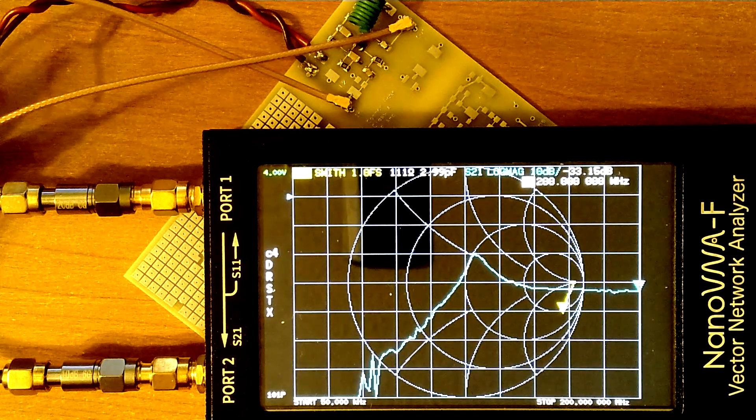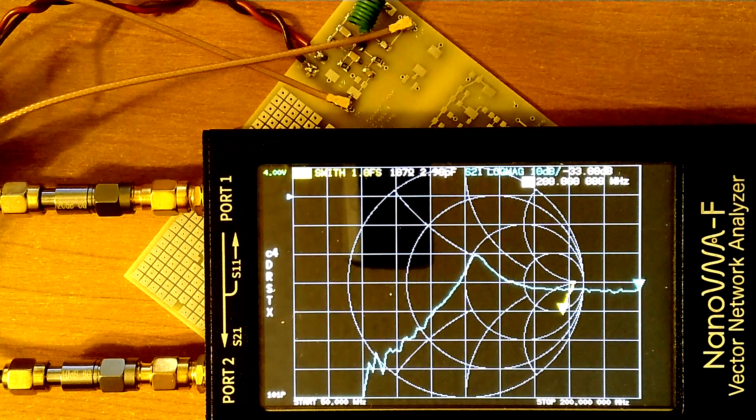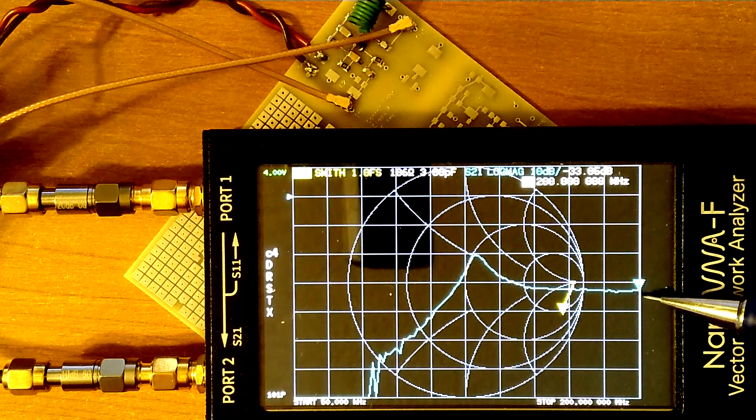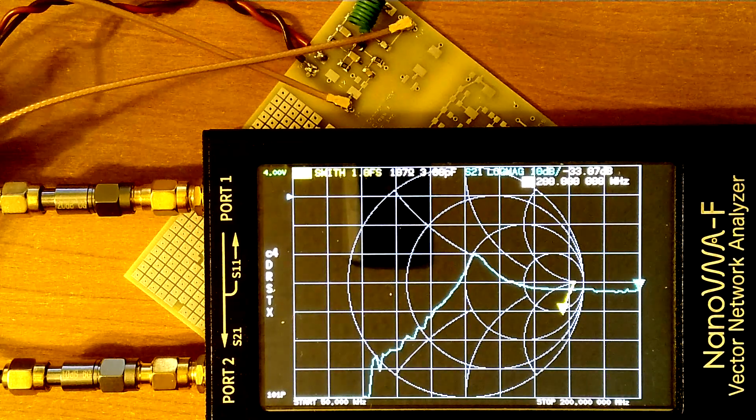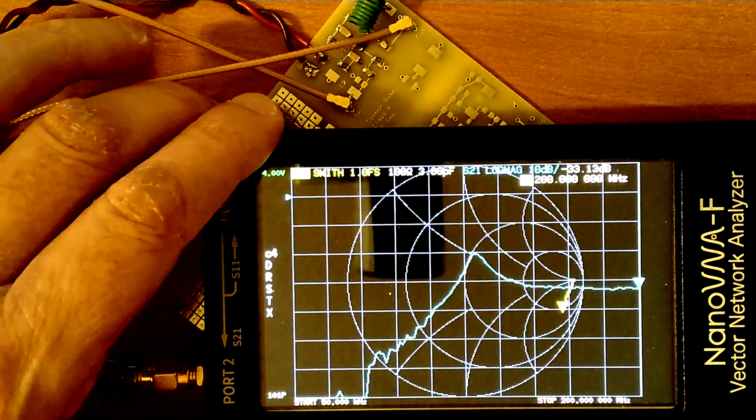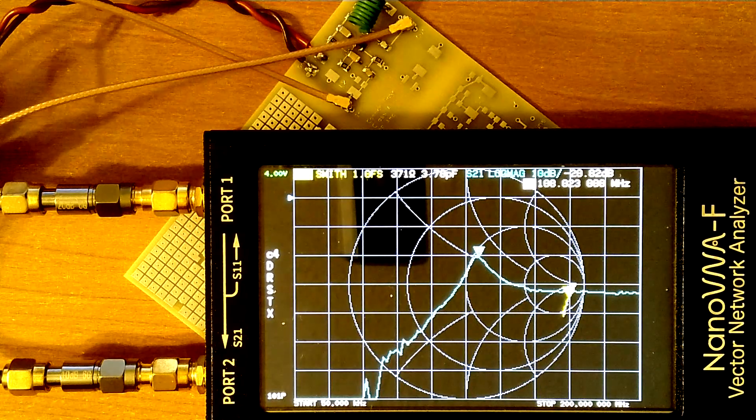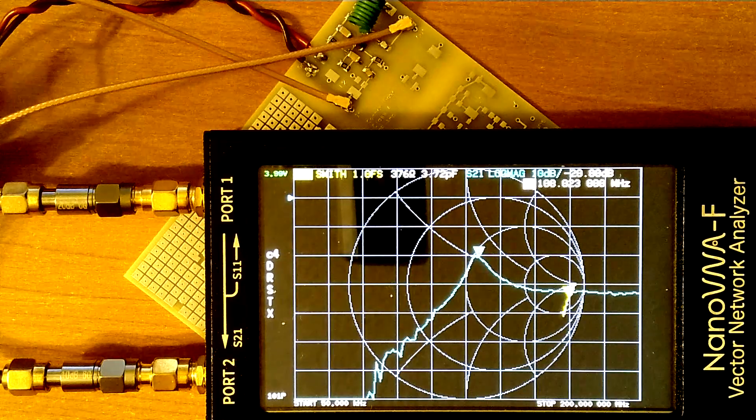So how well does it do measuring the amplifier? Well, this is the amplifier unpowered. The S11 is here. This is at 200 megahertz, which is the stop frequency. And I can change it down to the center frequency, which is around 108 megahertz. If I turn the power on, that would help. Let's see what happens.